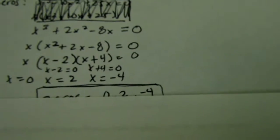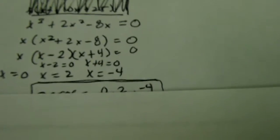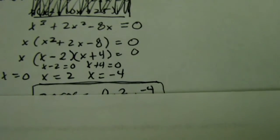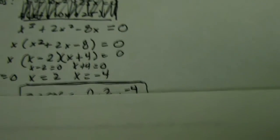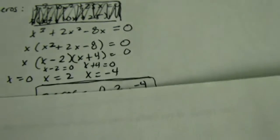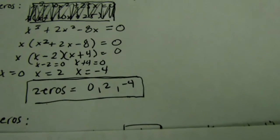Furthermore, set each x to zero. So, x equals zero. x minus 2 equals zero, which is x equals 2. x plus 4 equals zero, equals x equals negative 4. And our zeros are 0, 2, and negative 4.